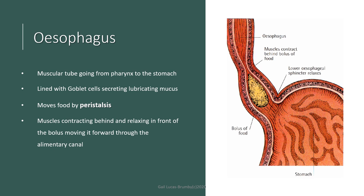The oesophagus is a muscular tube that runs from the pharynx to the stomach. It's lined with squamous epithelium with goblet cells that secrete mucus to moisten the food as it passes. The movement of food passing through the alimentary canal is known as peristalsis — muscles contracting behind the food relax and the bolus is pushed by muscles contracting in front. Bile also stimulates peristalsis, particularly in the duodenum, to evacuate food from the digestive system as quickly as possible.